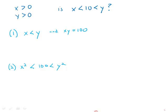The first statement tells us that x is less than y, and that x times y is 100. Now this is interesting, because 10 times 10 is 100.